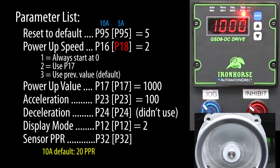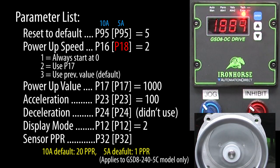One thing to be careful of, the 10 amp drive defaults to 20 PPR which is convenient because that's what the default for the GSD-8 encoder is. But the 5 amp drives default to 1 PPR so you may have to change that if you want to use one of the GSD-8 encoders. By the way, I love that the drive has a convenient 5 volt output for me to use with my sensors.